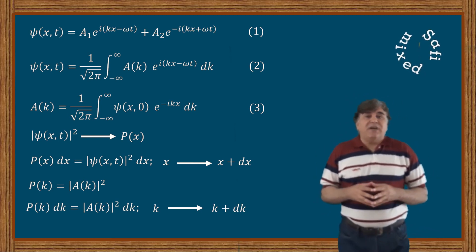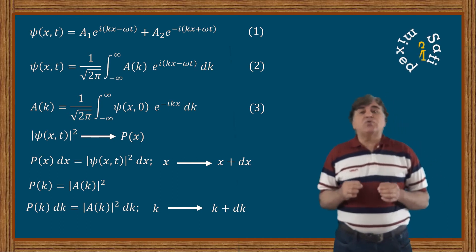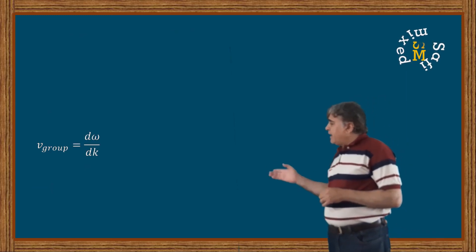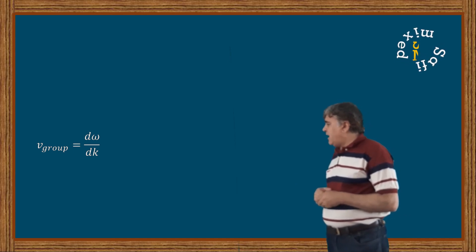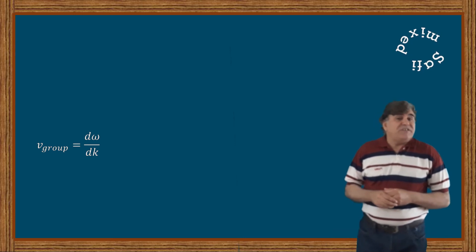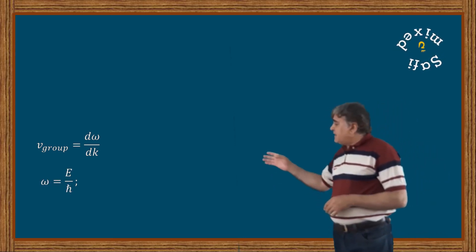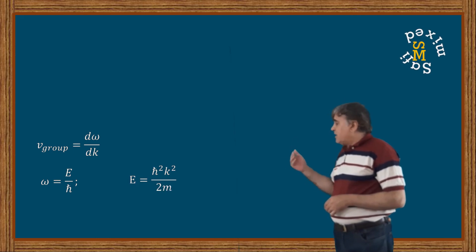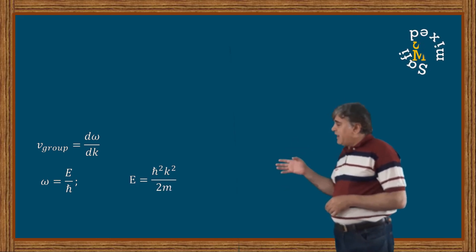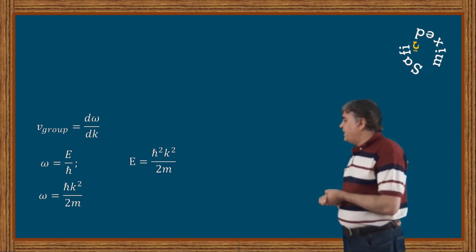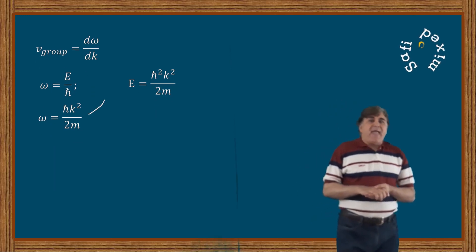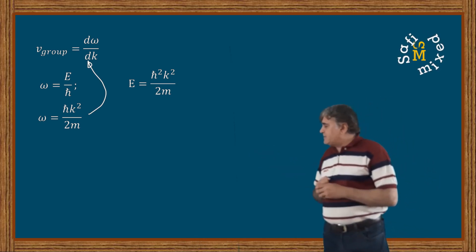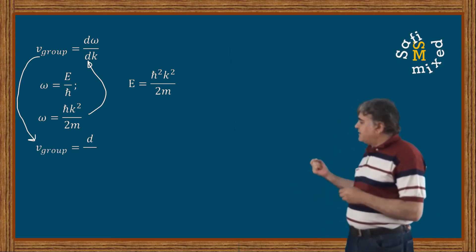Now let us find the velocity of the wave packet, which is generally known as group velocity. It is given by v_group = dω/dk. Substituting the value of ω = E/ℏ, and writing E from video part 1 as ℏ²k²/2m, we get ω = ℏk²/2m. Putting this value of ω into the group velocity formula, we can write v_group = ℏk/m.